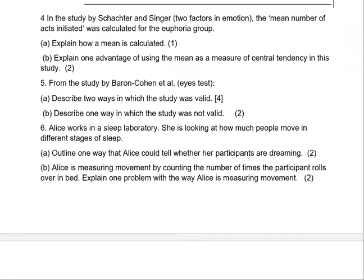Question four is related to Schachter and Singer. The mean number of acts initiated was calculated for the euphoria group — explain how the mean is calculated and give one advantage of using the mean. Then, regarding Baron Cohen's study, describe two ways in which the study was valid and one way in which the study was not valid.